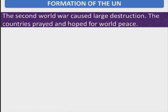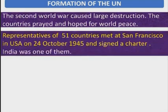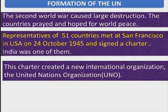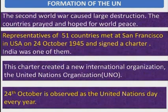Why was the UNO formed? The Second World War caused large destruction. The countries feared and hoped for world peace. Representatives of 51 countries met at San Francisco in the USA on 24th October 1945 and signed a charter. India was one of them. This charter created a new international organization — the United Nations Organization, or UNO. 24th October is observed as the United Nations Day every year.